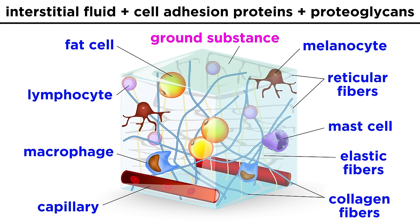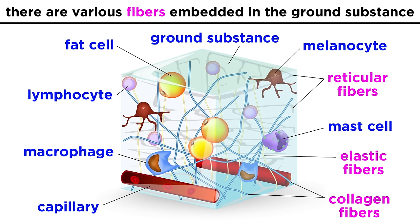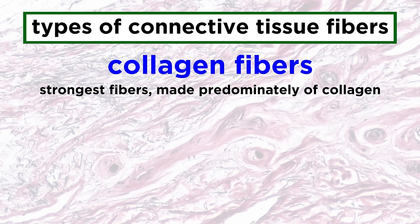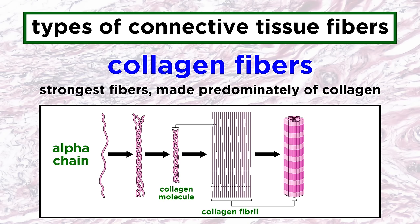Embedded within the ground substance are the fibers, and these come in a few varieties. Collagen fibers are the strongest, made predominantly of the protein collagen, which is the most abundant protein in the body. These proteins are assembled into cross-linked fibrils and then bundled together to form fibers. Gram for gram, these fibers are stronger than steel, and prevent things from being pulled apart.